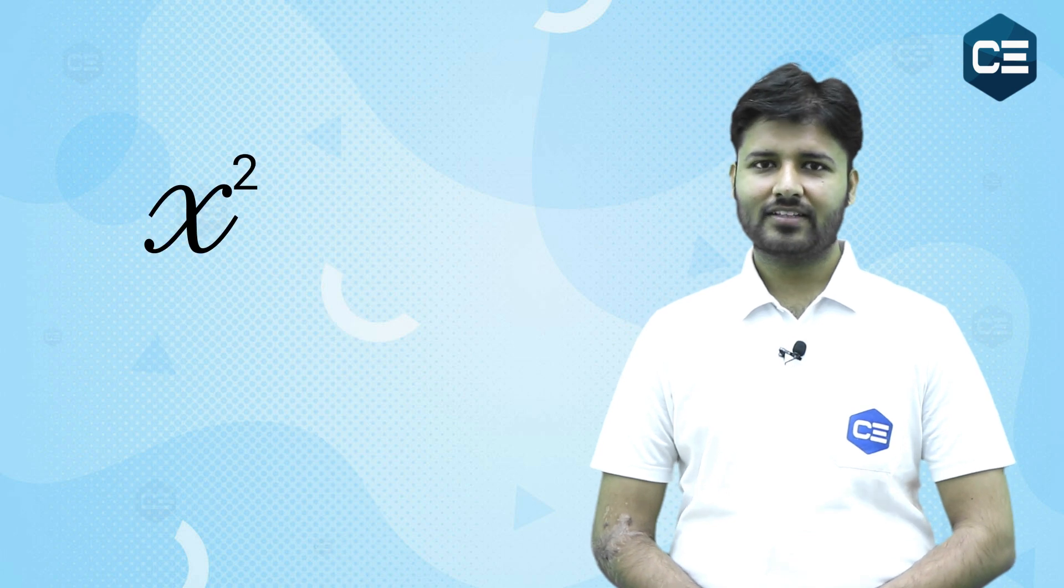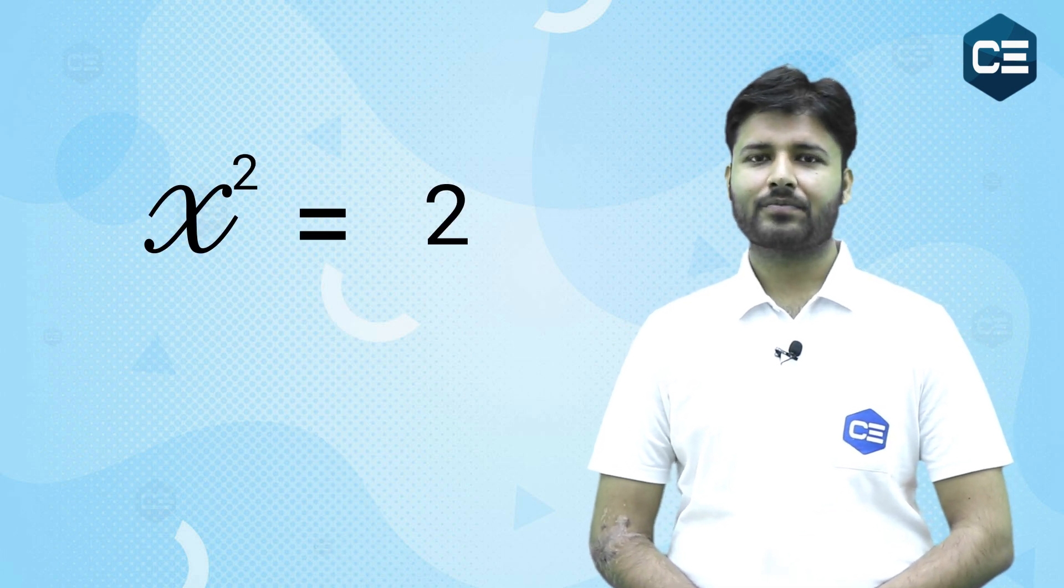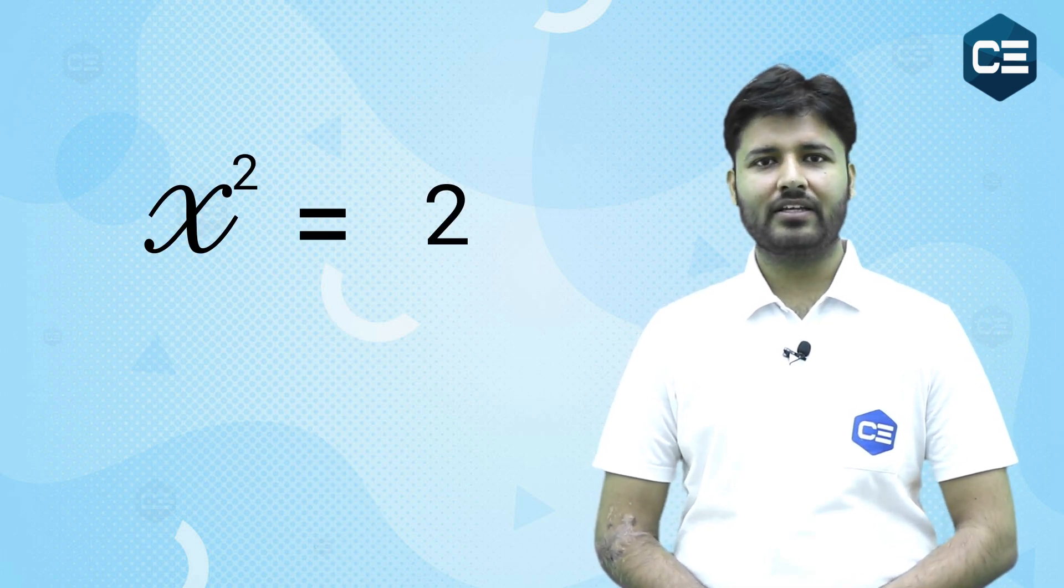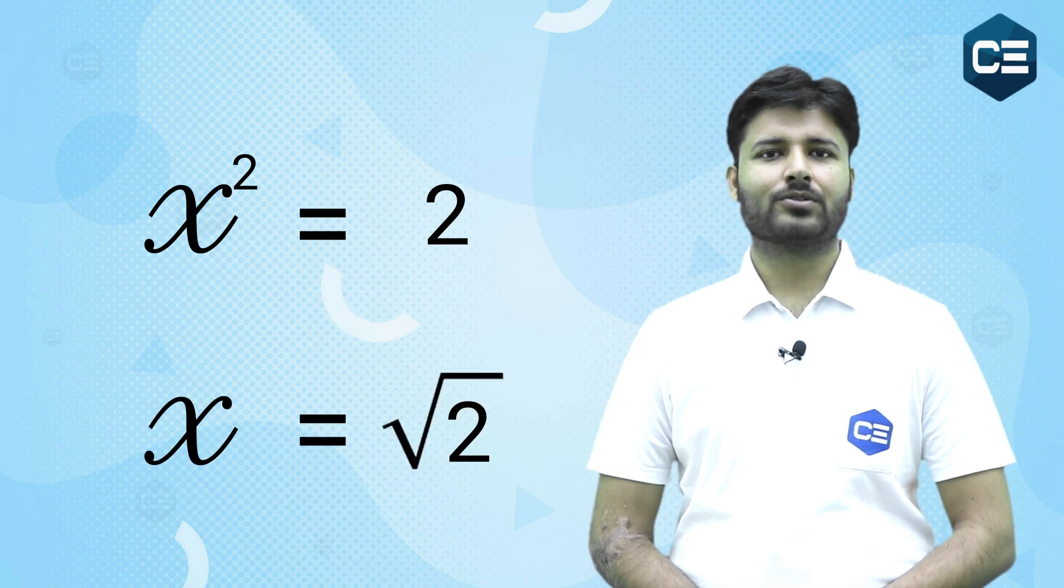Now consider the infinite power tower of x above the base, which is also equals to 2, which gives us x squared equals to 2. And for the positive roots only, we get x equals to root 2.